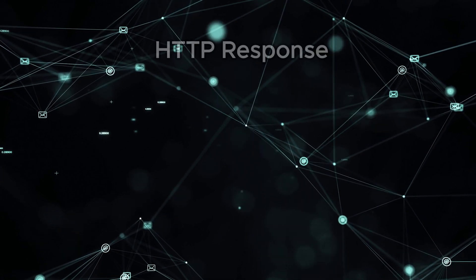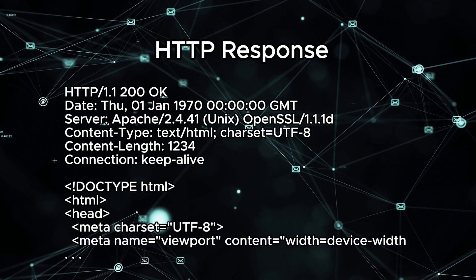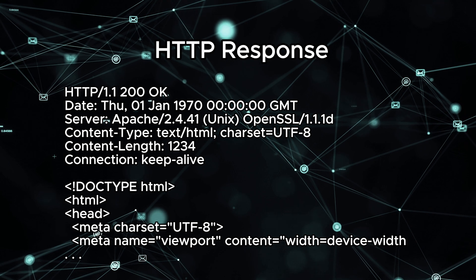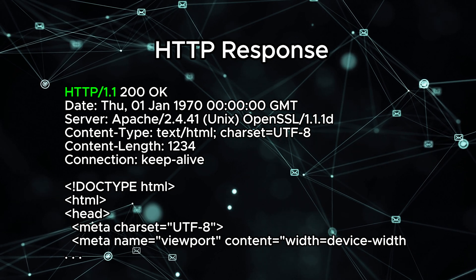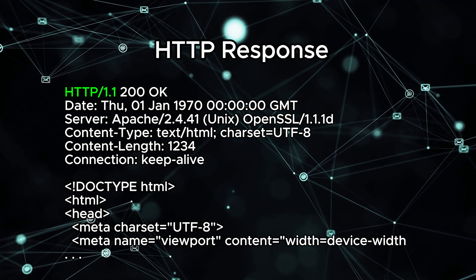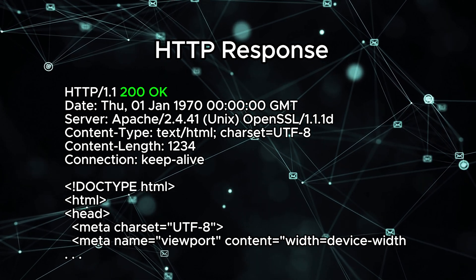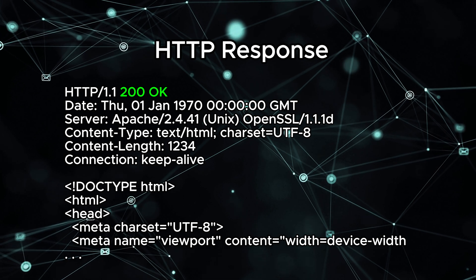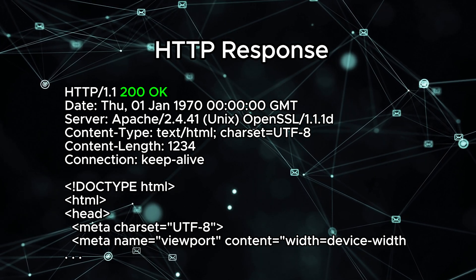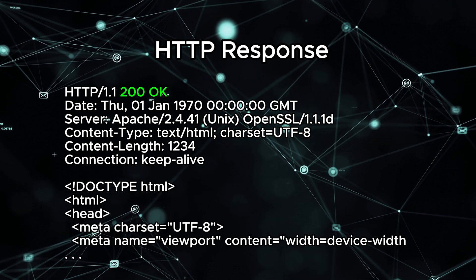Now let's see how the server responds to our requests. Here is an example of what an HTTP response looks like. It does not have a method because it's not really applicable — it's just a response. It starts with HTTP 1.1, which is the HTTP version. What's important is the 200 OK, which is called the HTTP status code. This indicates the result of the request — a 200 OK means that the request was successful.